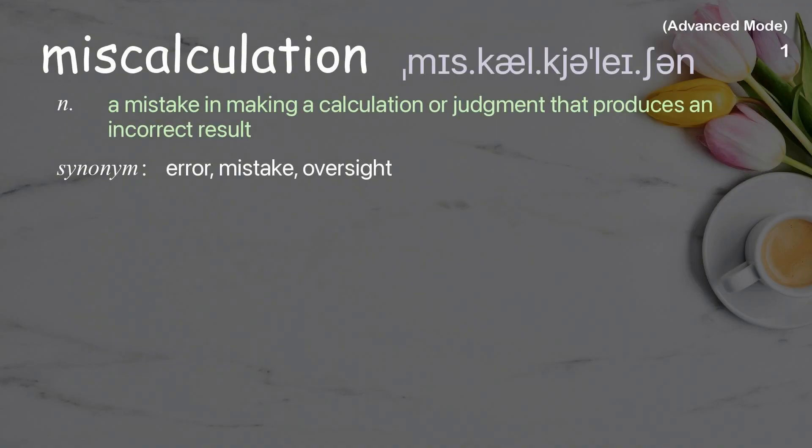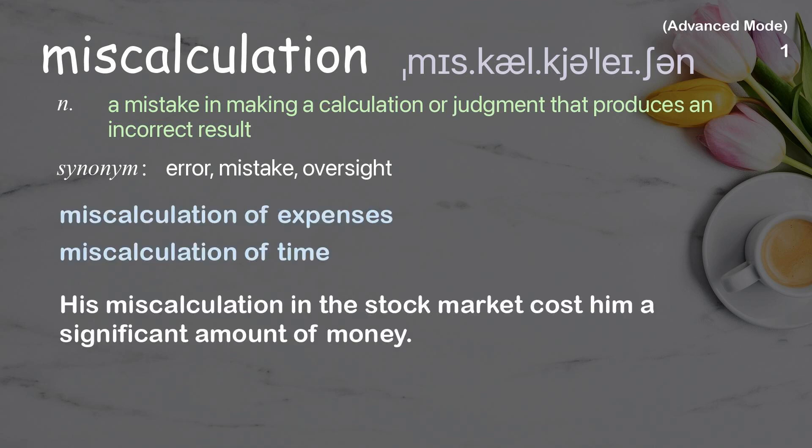Miscalculation: a mistake in making a calculation or judgment that produces an incorrect result. Examples: miscalculation of expenses, miscalculation of time. His miscalculation in the stock market cost him a significant amount of money.